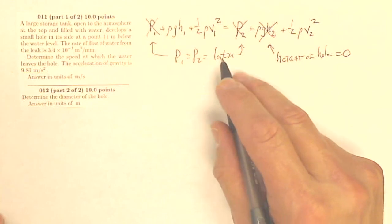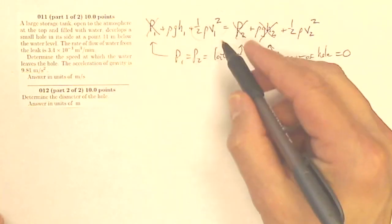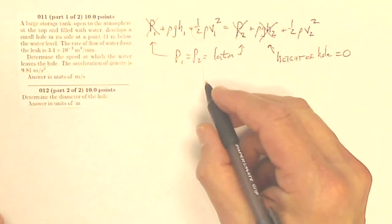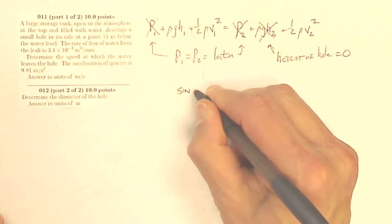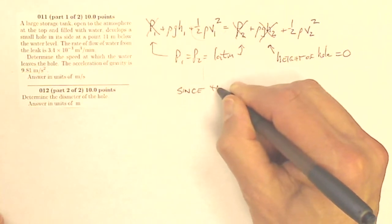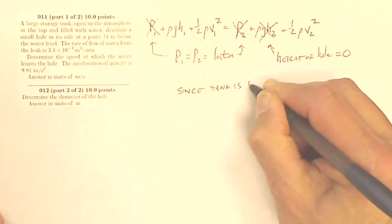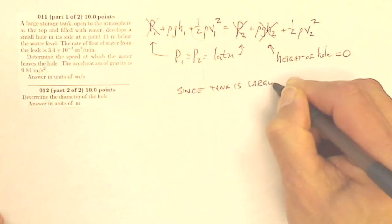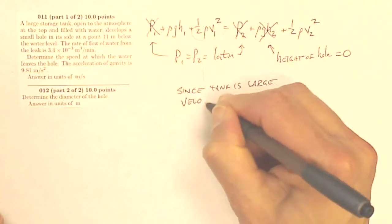And the other thing I have to assume is this one. Let me just bring this down here. I know that since the tank is large, I can just assume that that velocity is going to be very small. The velocity is negligible.